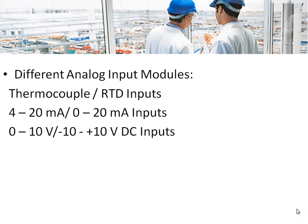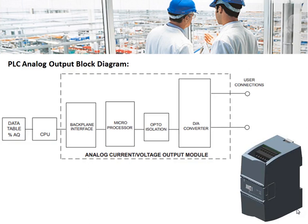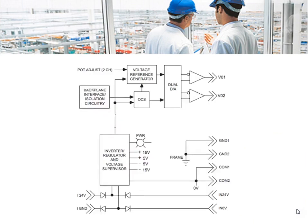The typical analog output block diagram is shown in the figure. The data from the CPU is interfaced through the backplane to a microprocessor or microcontroller, then through opto-isolation it is fed to a digital to analog converter. The commonly used DAC is the R2R type. In a two-channel analog output module, the signal from the CPU logic is fed through the backplane interface to the DAC and then to the field devices.